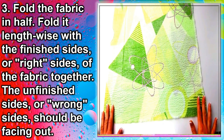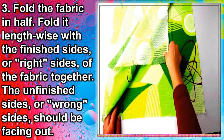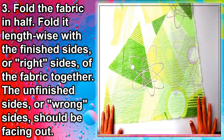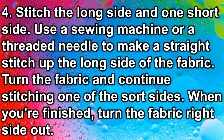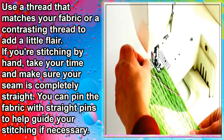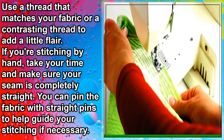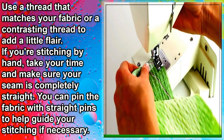If you're using a patterned fabric, take care to cut it so that the pattern is straight. Step three: fold the fabric in half lengthwise, with the finished sides — right sides — of the fabric together; the unfinished sides or wrong sides should be facing out. Step four: stitch the long side and one short side. Use a sewing machine or a threaded needle to make a straight stitch up the long side, then turn and continue stitching one of the short sides. When finished, turn the fabric right side out.